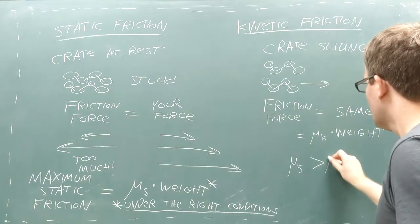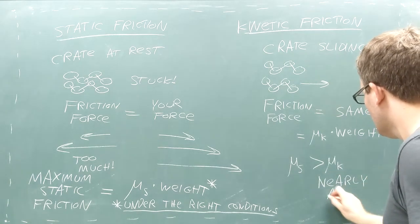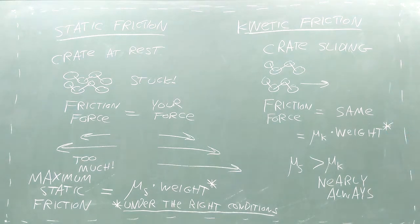In nearly all cases, the coefficient of kinetic friction is less than the coefficient of static friction, which means it's almost always easier to keep a crate in motion than it is to get it moving to begin with.